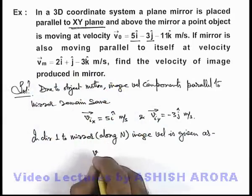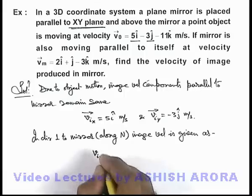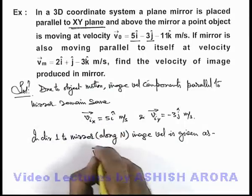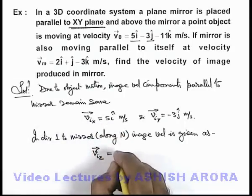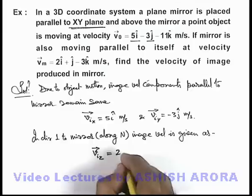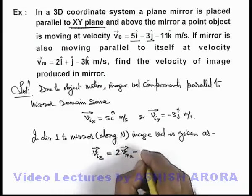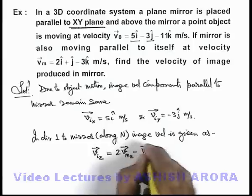So here velocity of image in Z direction, which is perpendicular to XY plane along the normal of mirror, here we can write it: velocity equals twice the velocity of mirror in Z direction minus velocity of object in Z direction.